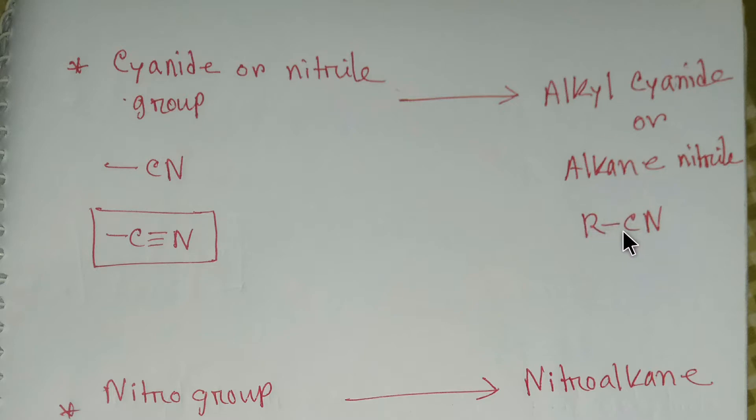This is alkyl nitride and the functional group of alkyl nitride is cyanide or nitride group. This is the structural formula of cyanide group or nitride group. In this group, nitrogen is bonded to carbon with three bonds.